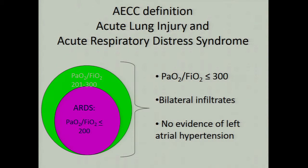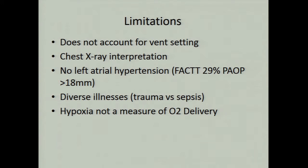This generated some confusion because it doesn't mean you have to prove there is no left atrial hypertension — if there is no evidence of it, you presume it is absent. A significant problem with this definition is that hypoxemia was defined without taking into consideration whether the patient is on mechanical ventilation and what support is being received. You can alter someone's PaO2 for the same FiO2 by changing ventilator settings, and this definition did not account for that.